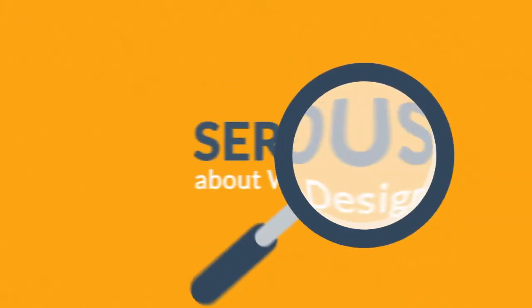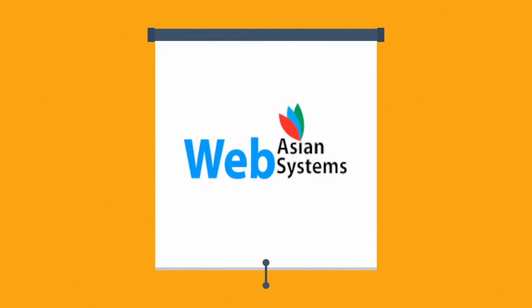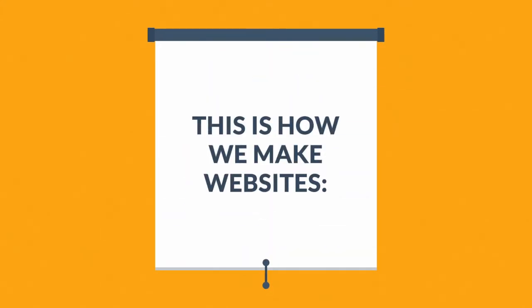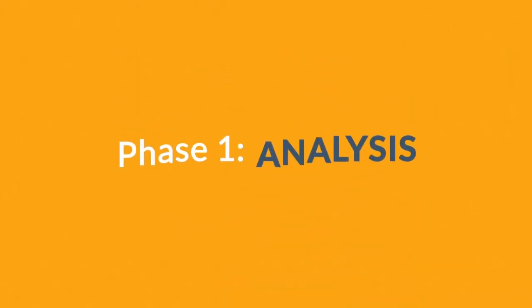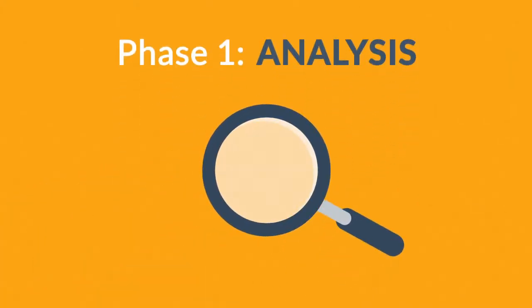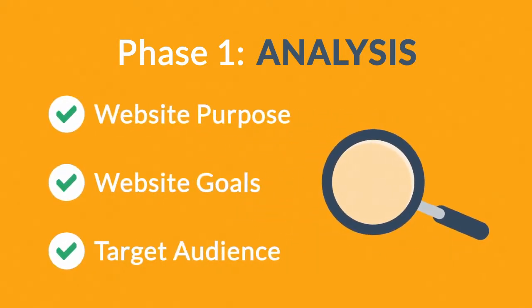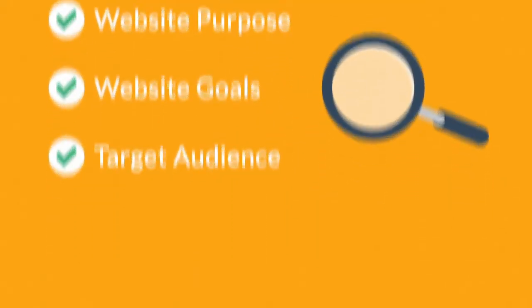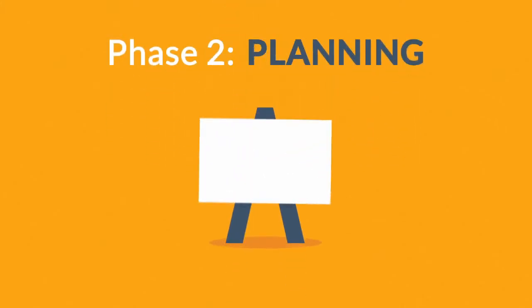What you have to do is look for someone serious about web design. That's where we come in. This is how we make websites, by following this seven-phase web design process. Phase 1: Analysis. The first step is always about information gathering, identifying things like the website purpose, goals, and target audience.